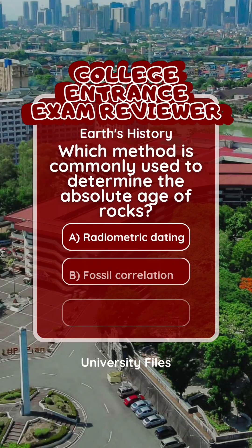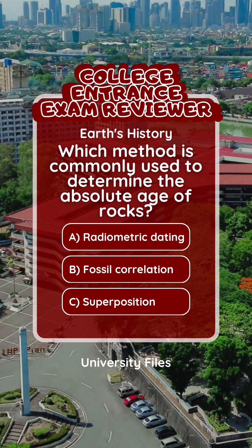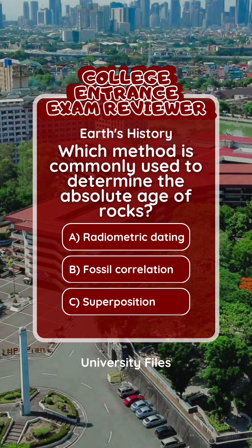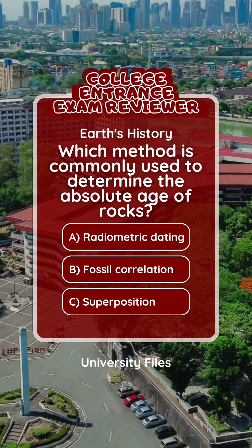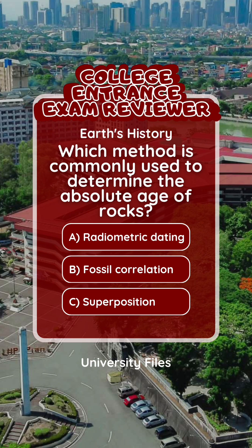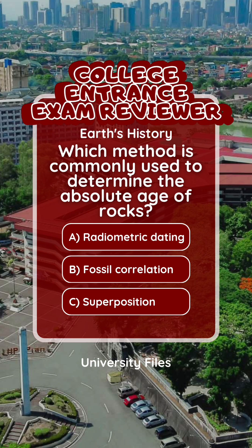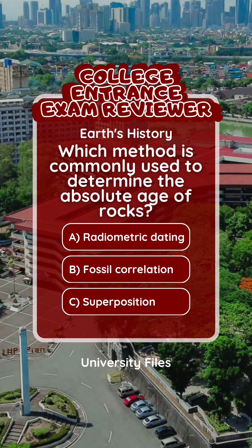Question 3. Earth's history. Which method is commonly used to determine the absolute age of rocks? A. Radiometric dating. B. Fossil correlation. C. Superposition.